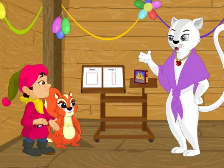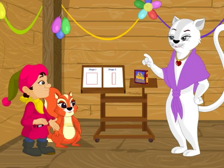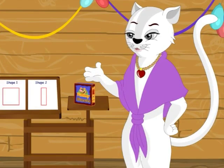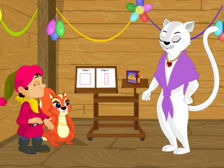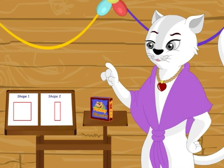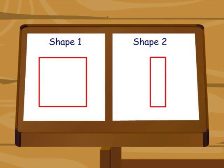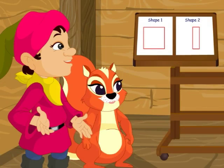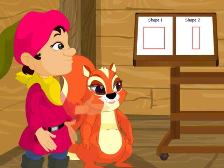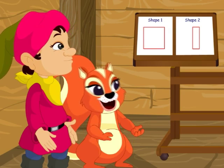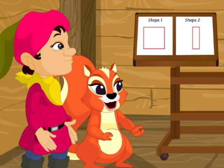I think that both of you have understood that tracing can help you find the shapes of objects. Now, I would like you to answer a question about tracing shapes. Amber and Sandy, look carefully at this box of biscuits. Can you guess which shape you will get if you trace the box? Will it be shape 1 or shape 2? I think shape 1 is the right shape because if I trace the box, I will get a square. No, I think that shape 2 is the correct answer. The tracing of this box should be a rectangle.